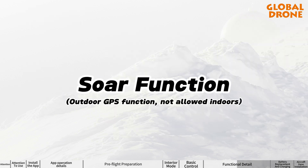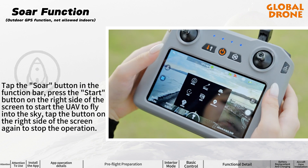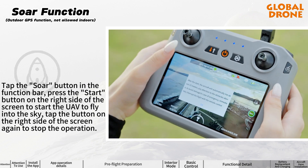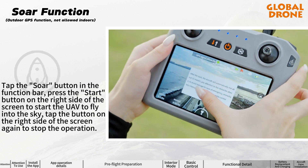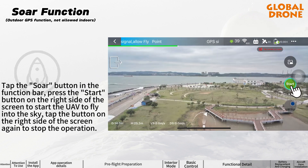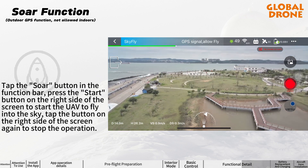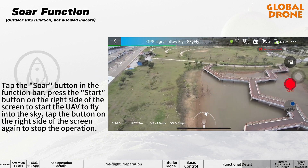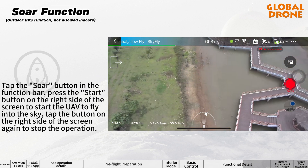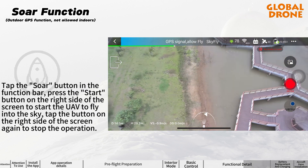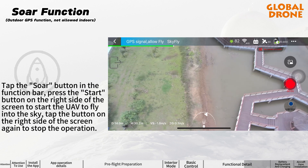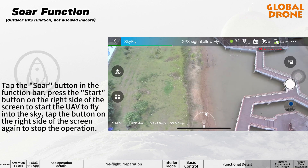Soar function: tap the SOAR button in the function bar, then press the start button on the right side of the screen to start the UAV flying into the sky. Tap the button on the right side of the screen again to stop the operation.